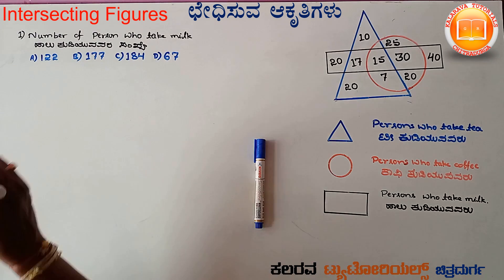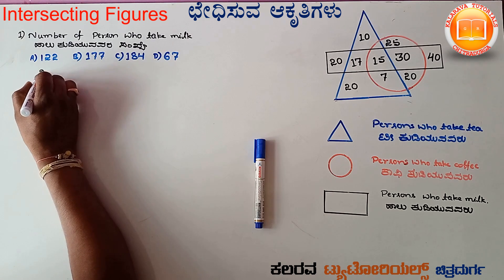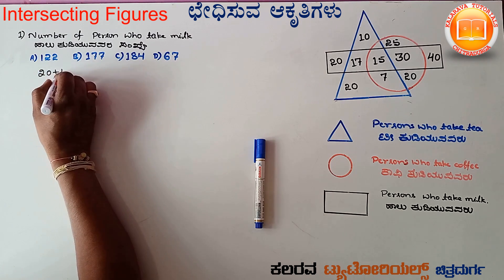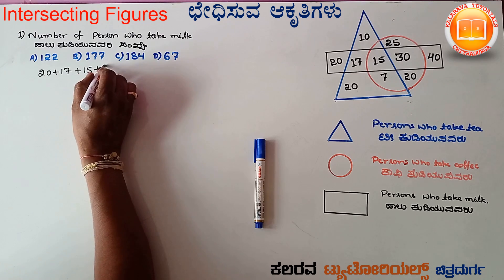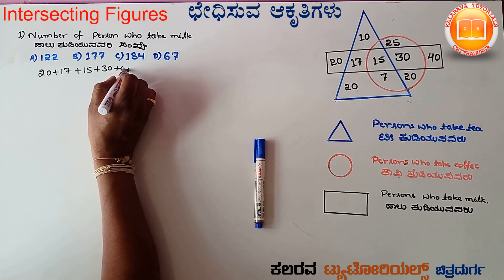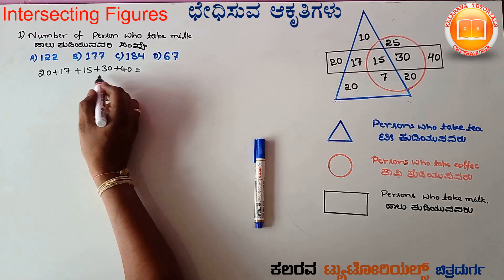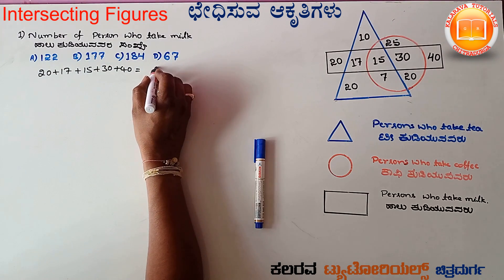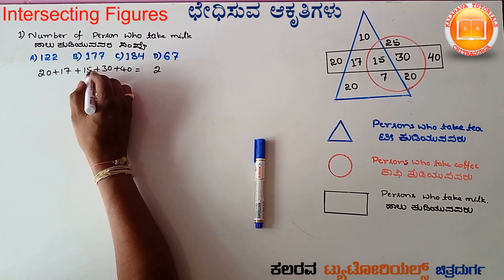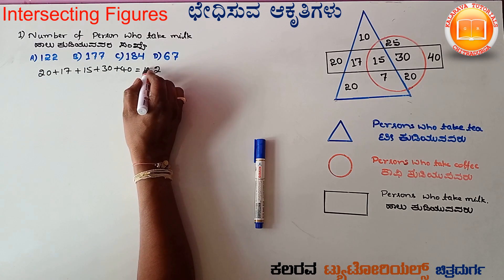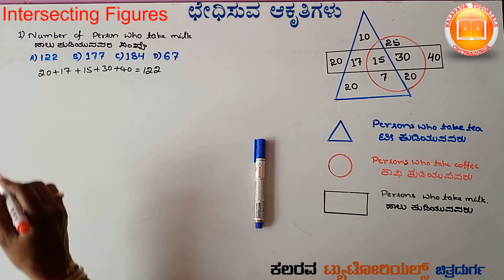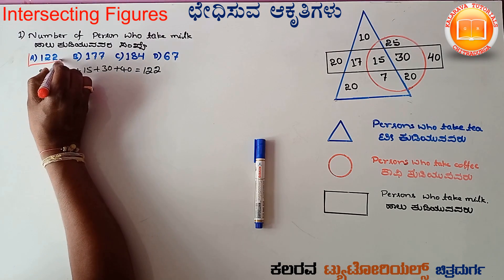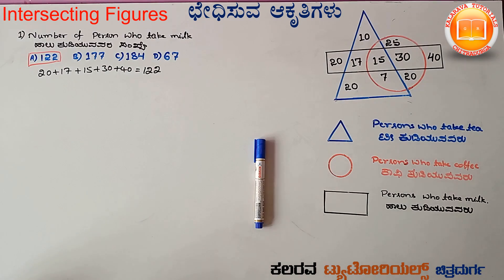The most important thing is 20 plus 70 plus 15 plus 30 plus 40, giving us 70, 45, 46, and 36. That totals 122 members who drink the milk. A is the correct answer.